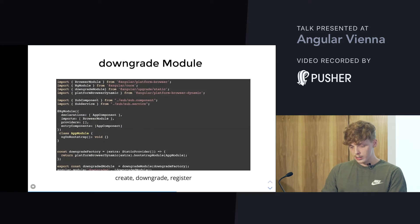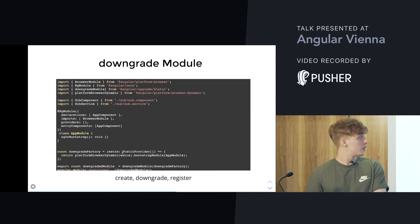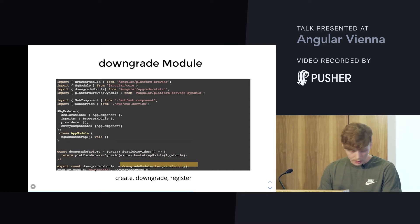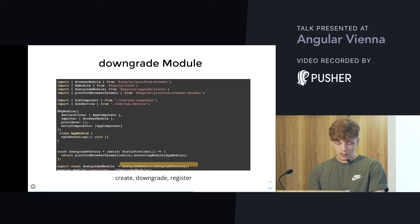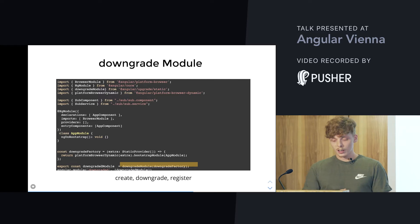Here's a quick example. You define your Angular 2 module as usual — this is just a small snippet. After that, you need to provide a function that takes one extra parameter, which is needed by downgrade module, and whose return value is the value from bootstrap module. When using downgrade module with this function, you get an Angular 1 module that you can later bootstrap and register as an Angular 1 module. That's the first step: your Angular 2 module is set up and downgraded to Angular 1, so you can move components to the new module.